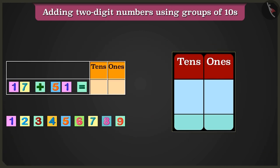You can add these numbers by writing them in the table of ones and tens. Here, for 17, in the box of tens, write 1 and in the box of ones, write 7.